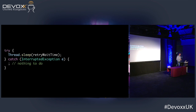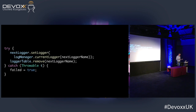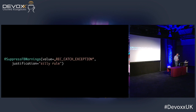Another classic: the InterruptedException is caught but there's no action. The author was obviously of the opinion that there's nothing to do — unless you want to be able to shut your thread down properly. Or catching Throwable, which means you have failed. In summary regarding exceptions, some people simply can't be helped. There are tools like SonarQube that really point out mistakes, but if you don't listen, they won't help.